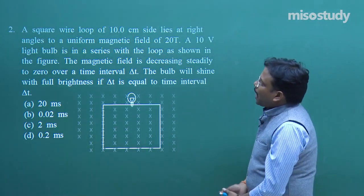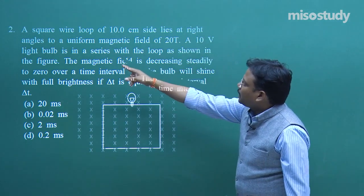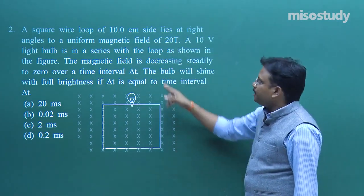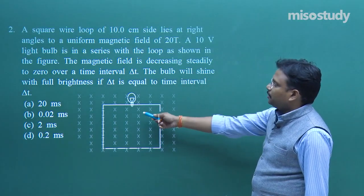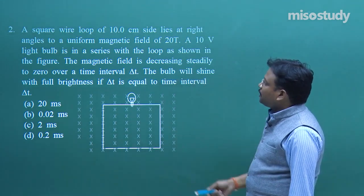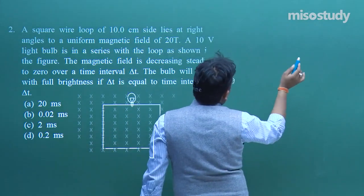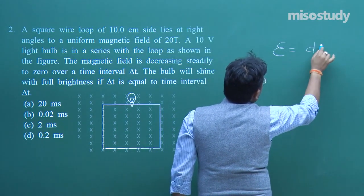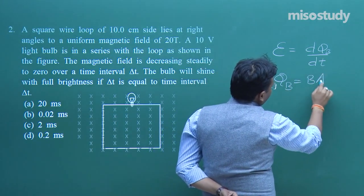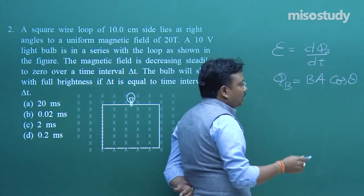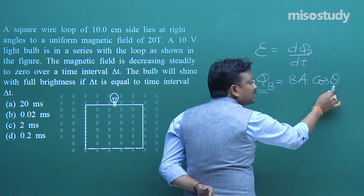A square wire loop of 10 cm side lies at right angles to a uniform magnetic field of 20 tesla. A 10 volt light bulb is in series with the loop as shown. The magnetic field is decreasing steadily. The key formula is: ε = −dφ_B/dt, where φ_B = BA·cosθ. If B, A, or θ changes, φ_B changes and induced EMF appears.